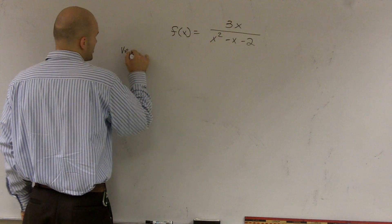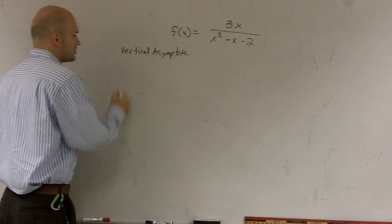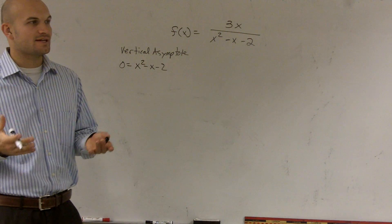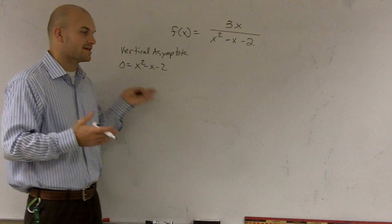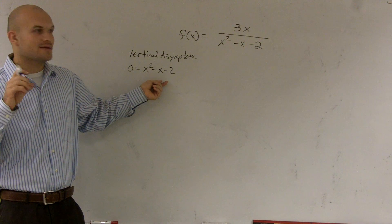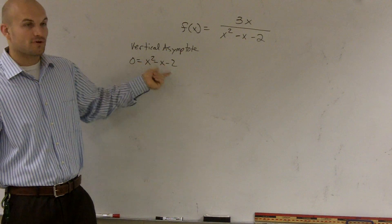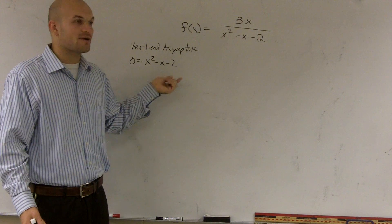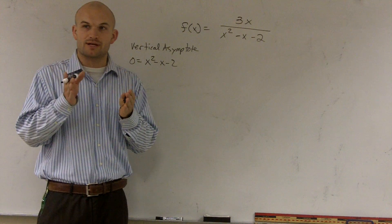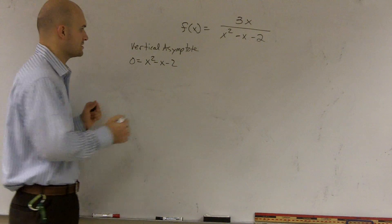I'll write 'vertical asymptote.' When you're talking about a vertical asymptote, we know that our graph can never cross at that point, because if it did, it would equal zero on the bottom. So my graph is never going to cross my vertical asymptote. However, my graph is always going to approach it all the way up to infinity and negative infinity — it's going to keep approaching, but never touch it nor cross it.